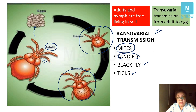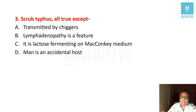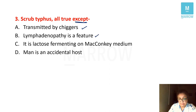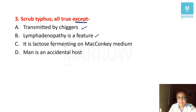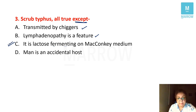Scrub typhus is very commonly asked. We got two questions on it. 'Scrub typhus — all true except': options include transmitted by chiggers (true), lymphadenopathy is a feature (yes, regional lymphadenopathy is seen), it is lactose fermenting on MacConkey medium, and man is an accidental host. The wrong statement is lactose fermenting on MacConkey — Rickettsia are non-cultivable on cell-free media, so they will never grow on MacConkey.